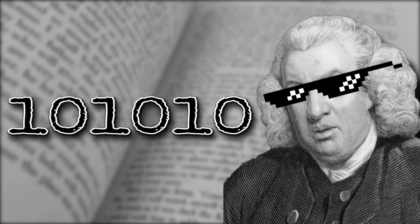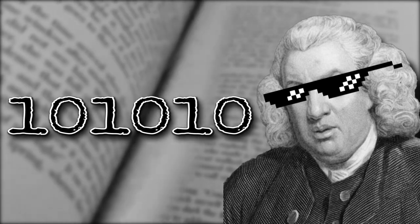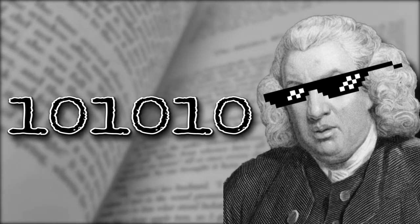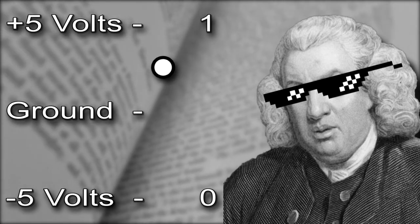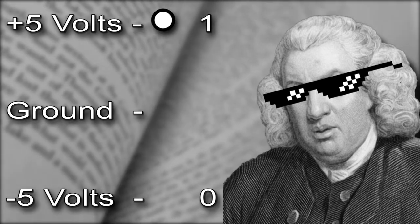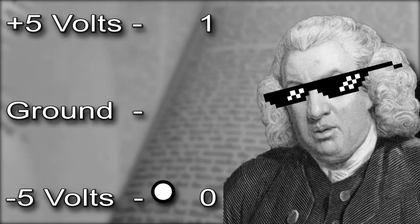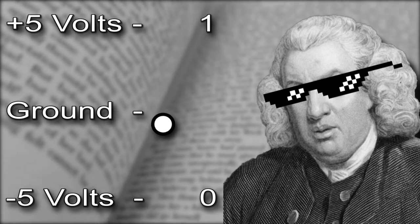why computers used binary instead of a decimal system. Computers work by sending signals of varying voltages. If the voltage is five volts above ground potential, it's a one, and if it's five volts below ground potential, it's a zero. It's simple.